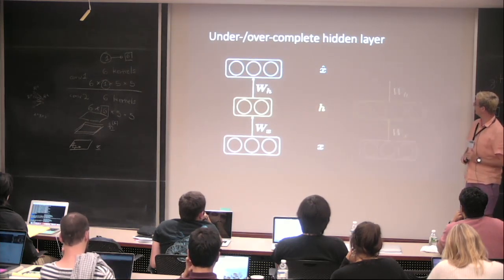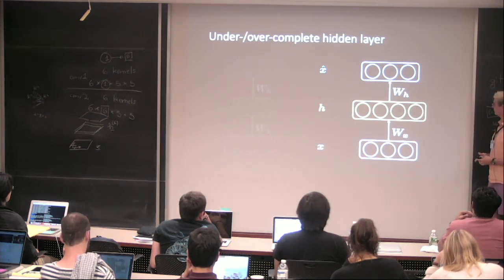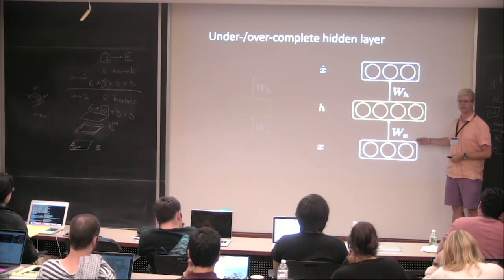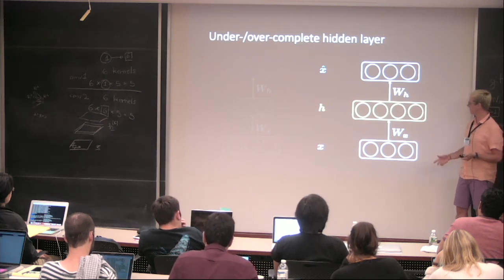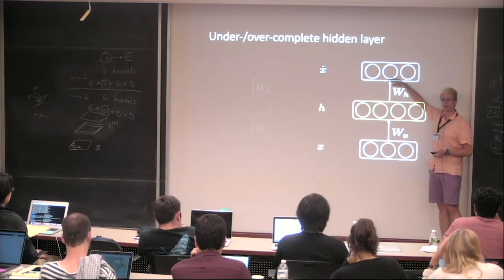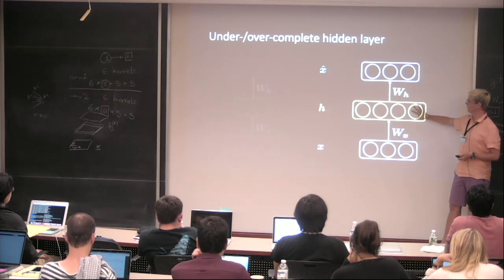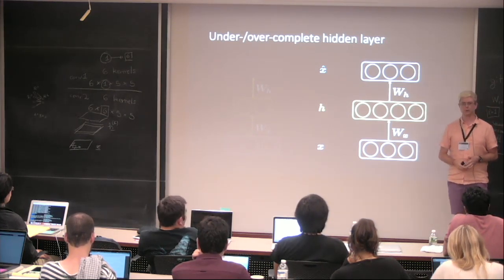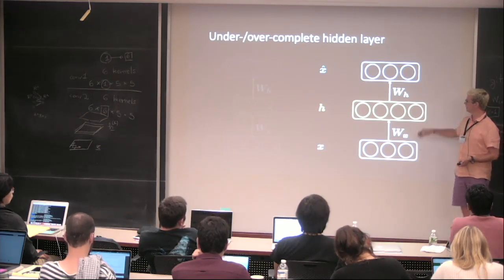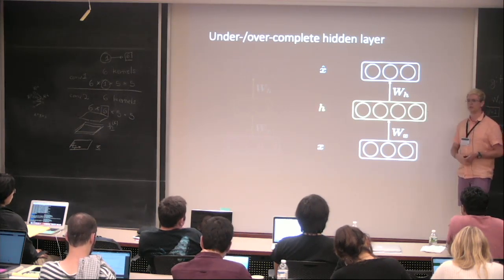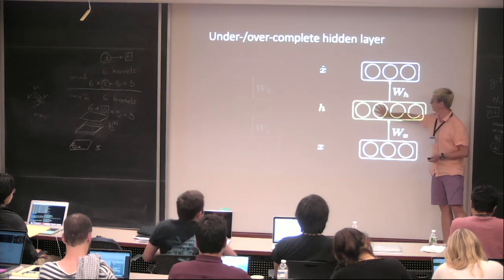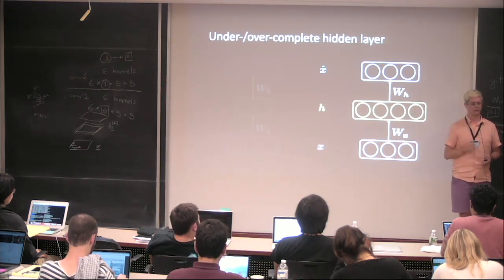There are also over-complete autoencoders where the hidden state is larger than the input. Since the network just has to replicate the input, it could simply copy it through. So why would we use an over-complete representation? It depends what constraints you introduce. For example, you could enforce sparsity — turning some neurons to zero — so each neuron encodes a specific characteristic of your data.